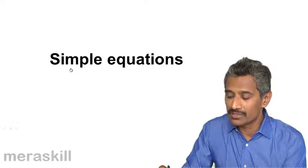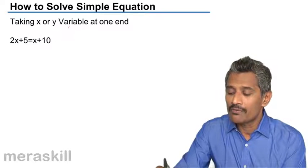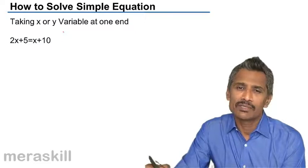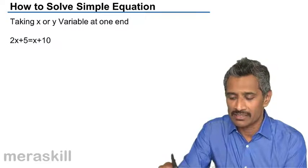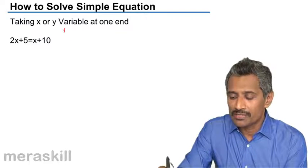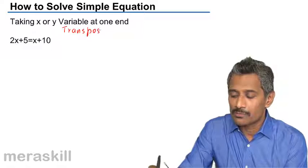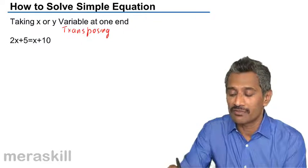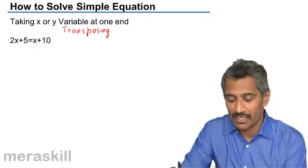How to solve a simple equation - this is something we've all been familiarized with right from class 8, 9, 10. We normally use the process of transposing. Transposing means you take all the variables to one side and all the constants to the other side.